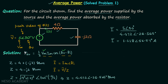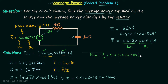Now we will find the average power. We have the peak value of current Im and the phase θi, so the average power equals half multiplied by Vm which is 5, multiplied by Im which is 1.118, multiplied by cos(θv − θi) = cos(30° − 56.57°). When you simplify this, the average power supplied by the source equals 2.5 watts.